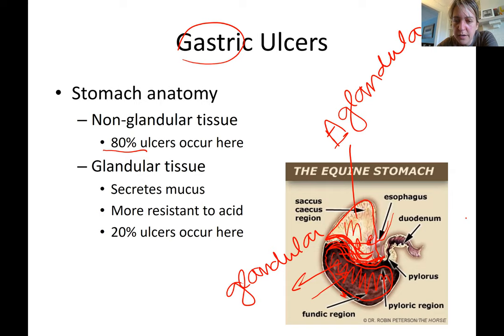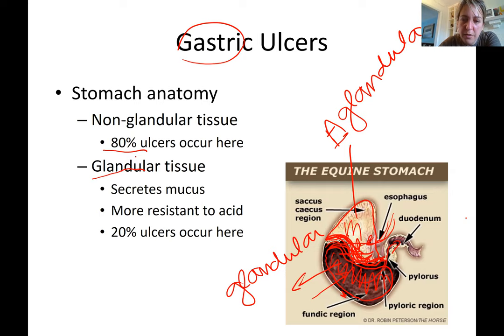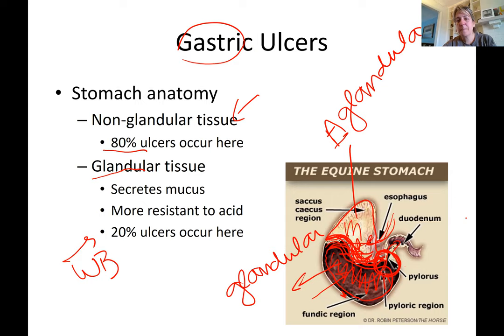Food comes from the mouth through the esophagus, gets digested and broken down a bit in the stomach, and leaves through the duodenum. To diagnose gastric ulcers you need an endoscope. Ulceration in the aglandular area is easy to see, but you need a much longer endoscope to see glandular area ulcerations. In the pyloric area there can also be ulcers — warm bloods tend to have ulcers there, which is more difficult to both diagnose and treat.